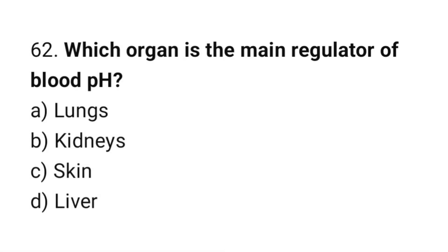Question number 62: Which organ is the main regulator of blood pH? The correct answer is B: Kidneys.